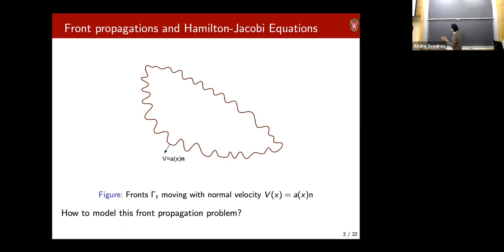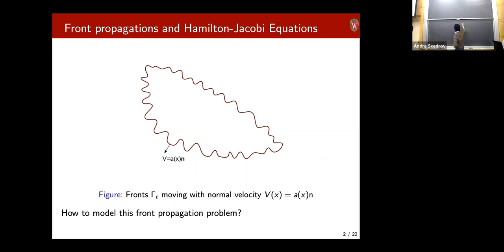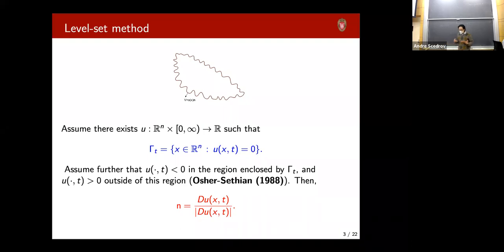Let me draw a second example. What if gamma zero is the boundary of a rectangle in 2D and a(x) is always one — so the normal velocity is always one, moving in all directions? The question is non-trivial because of the four corners, which are singular. How do we define the normal vector there? How do we model the front propagation problem? It turns out this question was studied only recently.